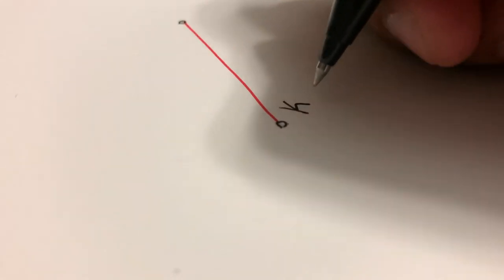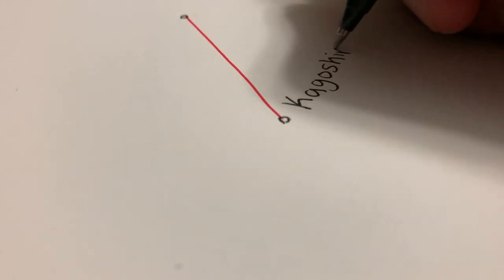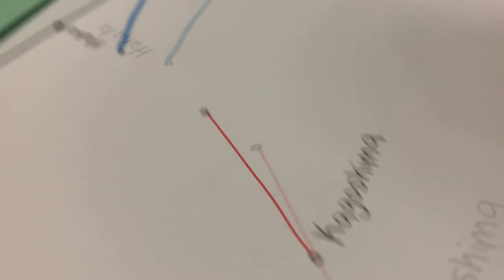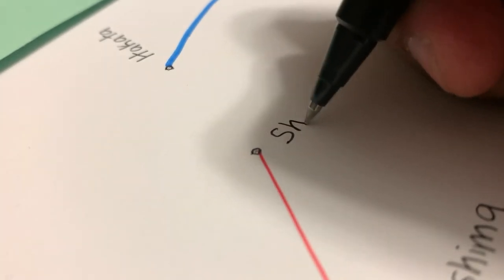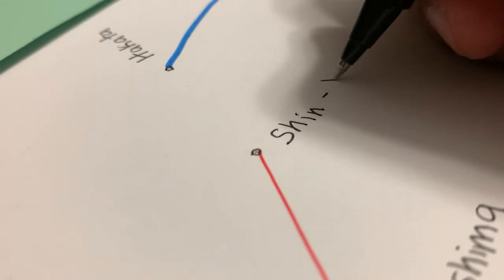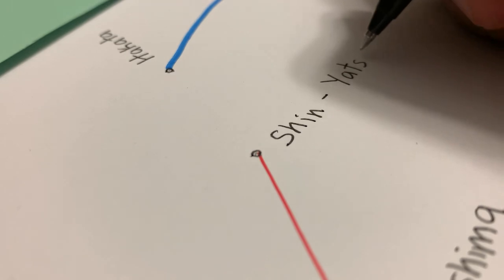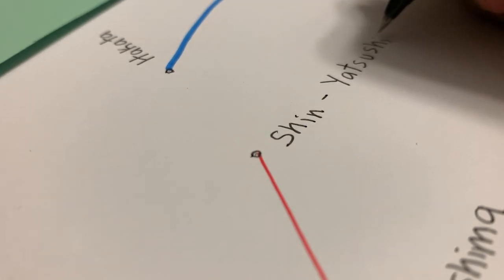The island of Kyushu would see the completion of the first stage of its own Shinkansen. In March 2004, the line was completed between Kagoshima in the south and Shin Yatsushiro in Kumamoto City.